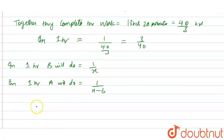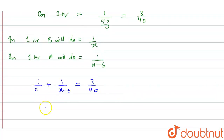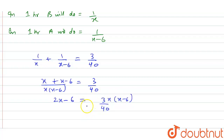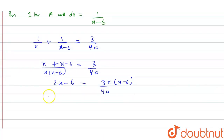According to the question: 1 upon x plus 1 upon (x minus 6) is equal to 3 by 40. By taking the LCM we get x(x minus 6) in the denominator, so: x plus (x minus 6) over x(x minus 6) equals 3 upon 40. That gives 2x minus 6 equals 3 into x(x minus 6) divided by 40, which we can write as 2x minus 6 equals (3x squared minus 18x) divided by 40.